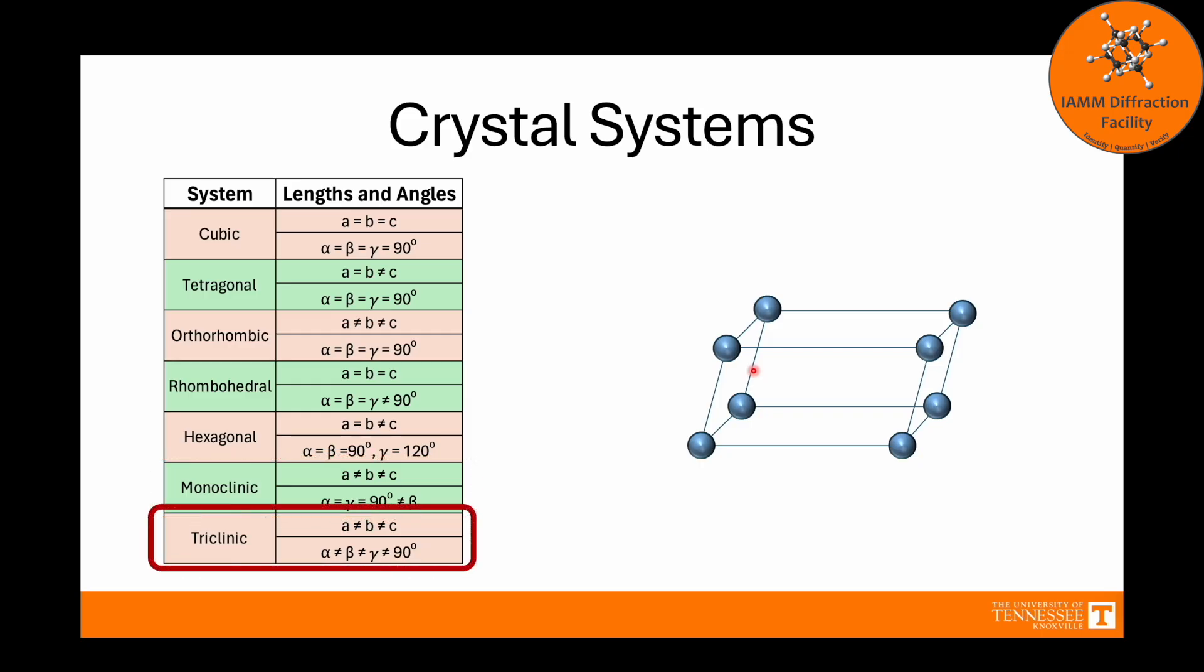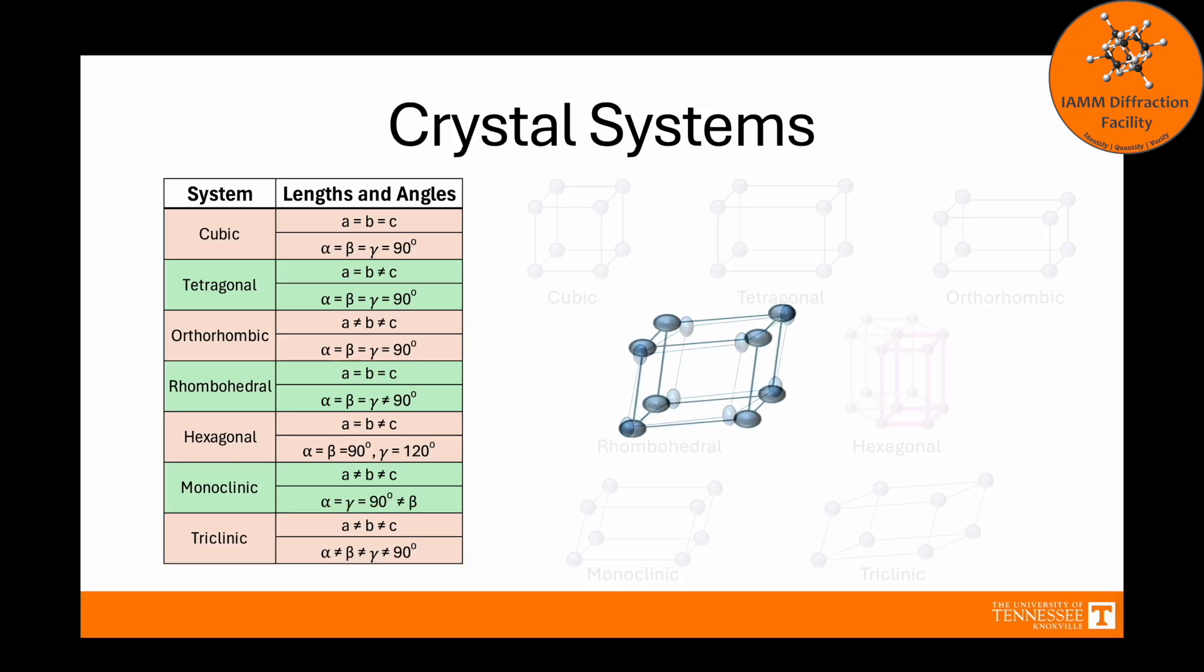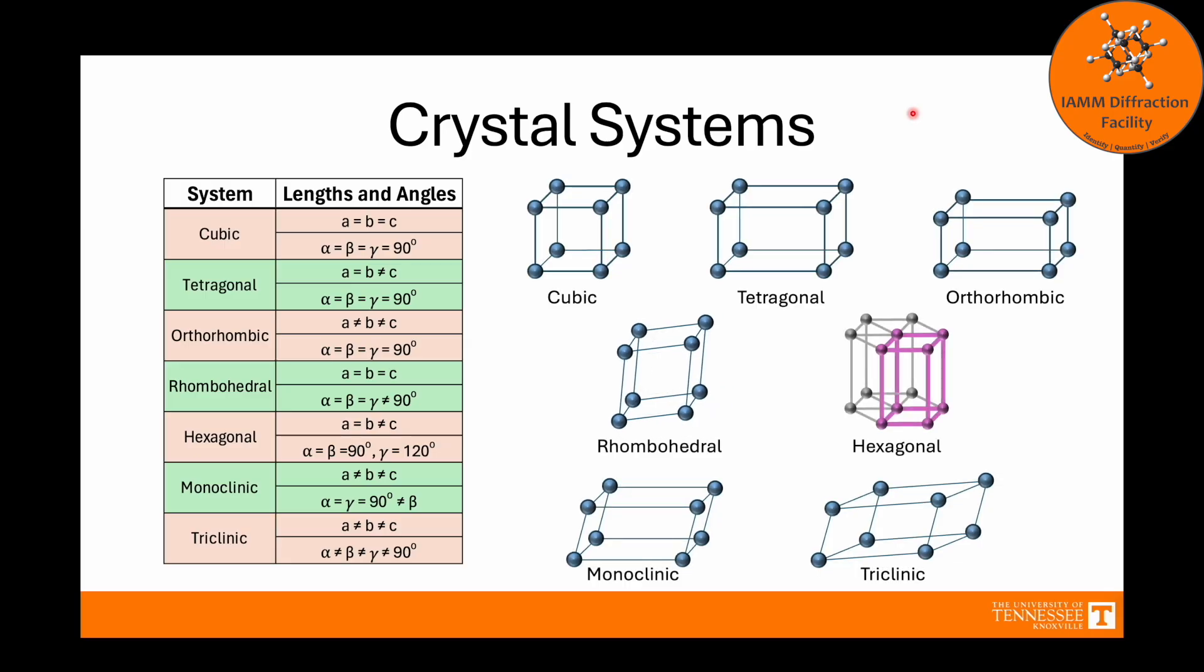Finally, triclinic has the least amount of symmetry to it. Basically, none of your edge lengths are equal to each other, and none of the angles are equal to each other, and none of them equal 90 degrees. In other words, change everything and we get triclinic. It's kind of a mess. Here is a summary of all the different crystal systems.